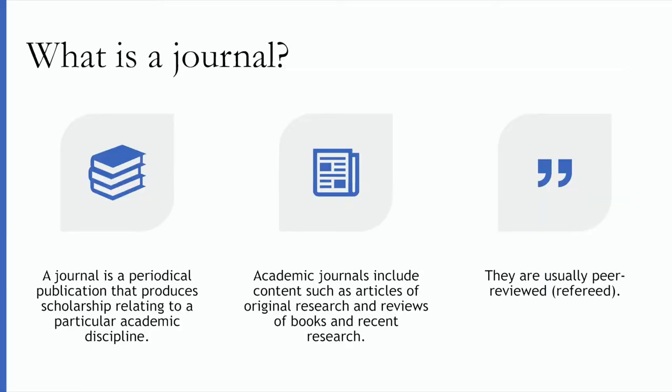A journal is a periodical publication, which means it is published on a regular schedule. Often journals are published two to four times per year in separate issues. Journals tend to be focused on producing scholarship on a particular academic discipline or theme. Academic journals contain content such as articles of original research, reviews of books, or reviews of recent research.